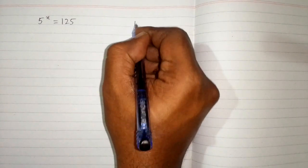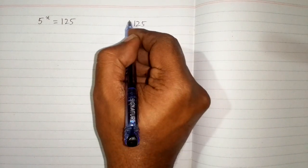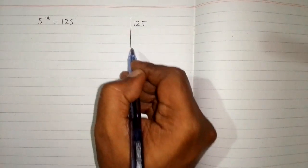In this video we will solve an exponential equation: 5 raised to the power x is equal to 125. So first of all we will factorize 125 by prime factorization.